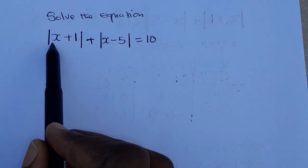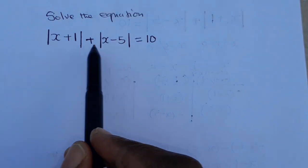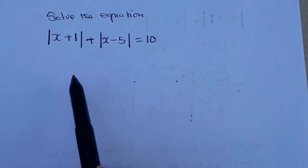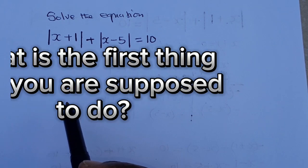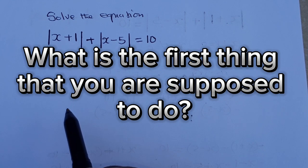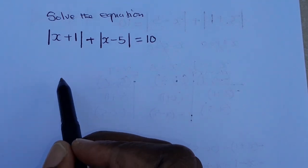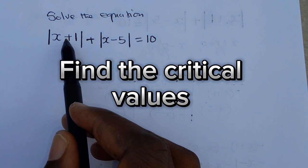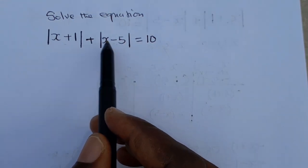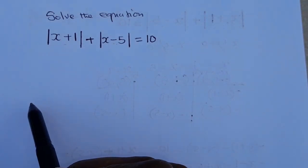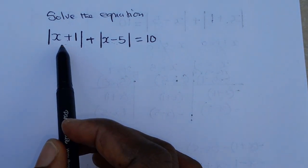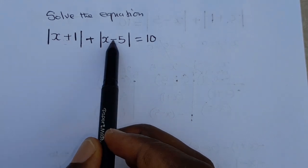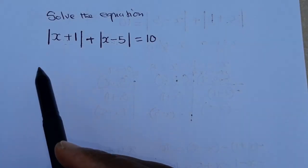The first question that we have says to solve the equation. We have this absolute value equation that we are supposed to solve. The first thing you are supposed to do is to find the critical values of the expressions given inside the absolute value. To find the critical values, we are going to equate each of these expressions to zero.